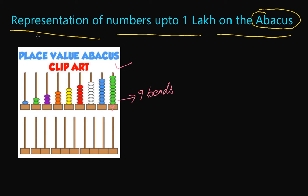In this class we are going to show how we can represent one lakh on the abacus. How can we say that one lakh can be represented on an abacus? In the previous class we already wrote that one lakh can be written as 1,00,000. According to the Indian number system, we put the comma before the thousand place and before the lakh place.